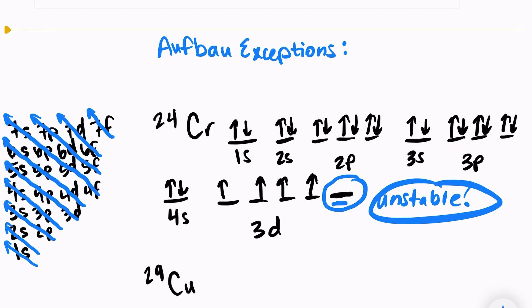So instead, what's going to happen is one electron from 4s is actually going to move up into the 3d sublevel. And again, the reason is because it's very unstable for 3d to have an empty orbital. It's more stable for 4s to have one electron and 3d to have one electron in every orbital. So instead, what this is going to look like, we will have 4s1 and 3d5.